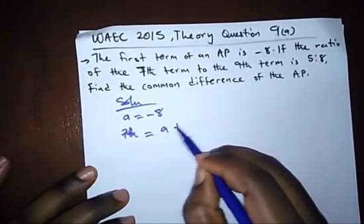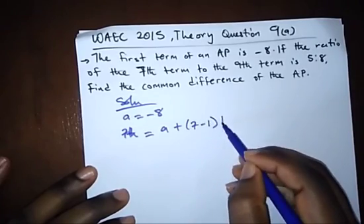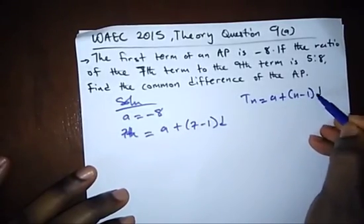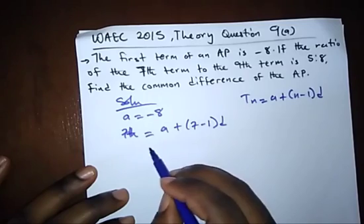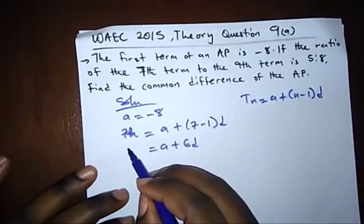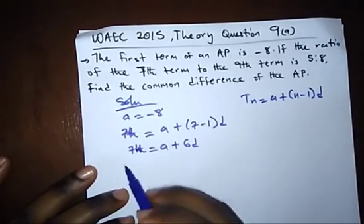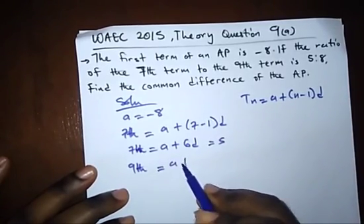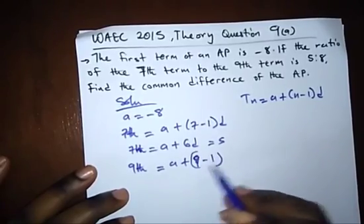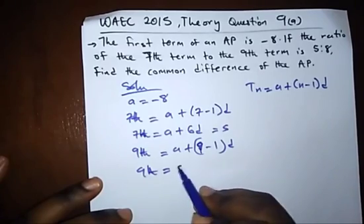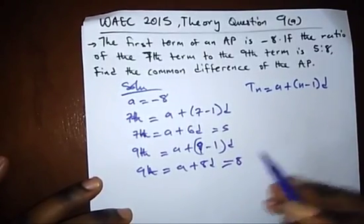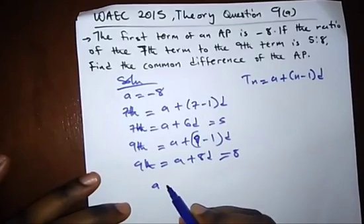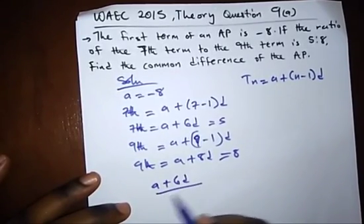Using the formula, our 7th term is a + 6d. Our 9th term is a + (9-1)d, which equals a + 8d. The ratio condition says (a + 6d) over (a + 8d) equals 5 over 8.